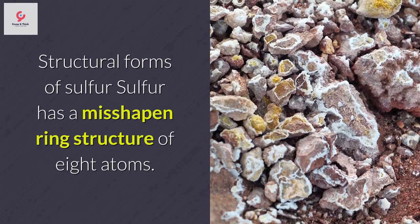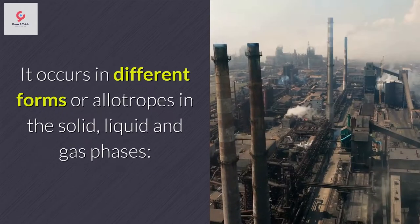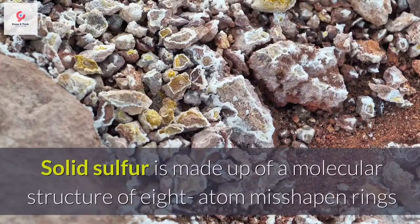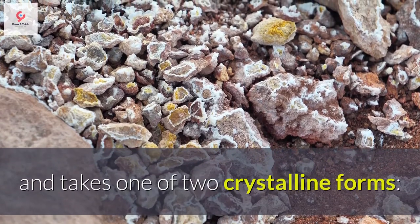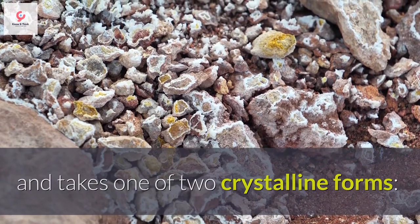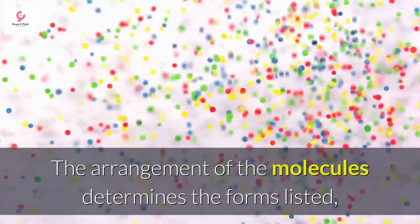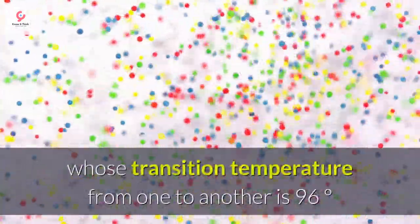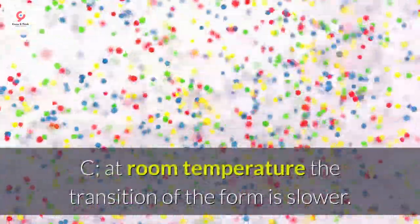Structural forms of sulfur: sulfur has a misshapen ring structure of eight atoms. It occurs in different forms or allotropes in the solid, liquid, and gas phases. Solid sulfur is made up of a molecular structure of eight-atom misshapen rings and takes one of two crystalline forms: the orthorhombic octahedron S-alpha and the monoclinic prism S-beta. The arrangement of the molecules determines the forms listed, whose transition temperature from one to another is 96 degrees Celsius. At room temperature the transition of the form is slower.